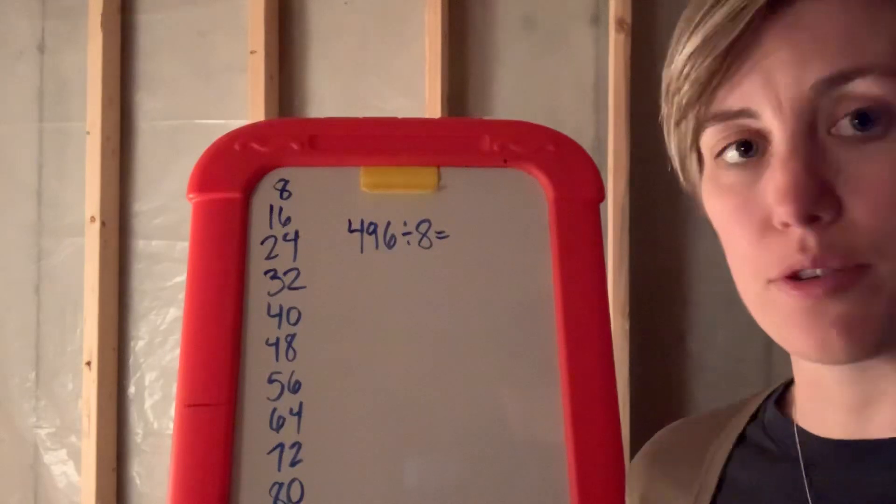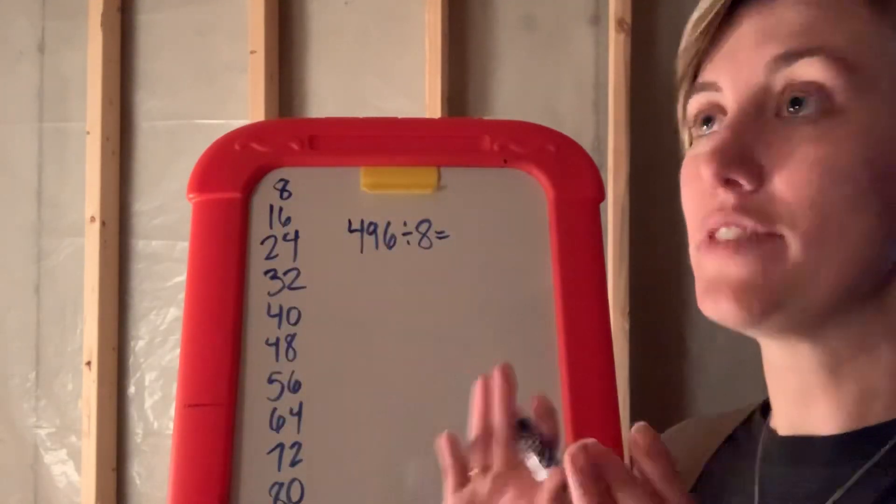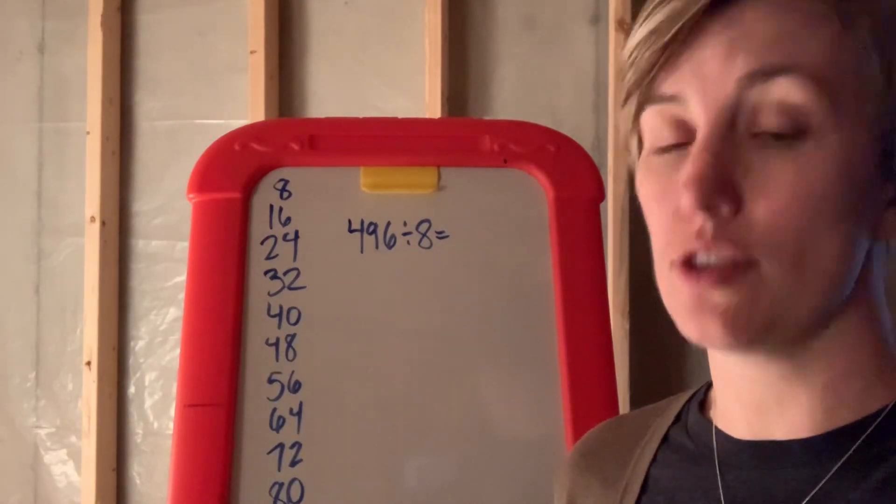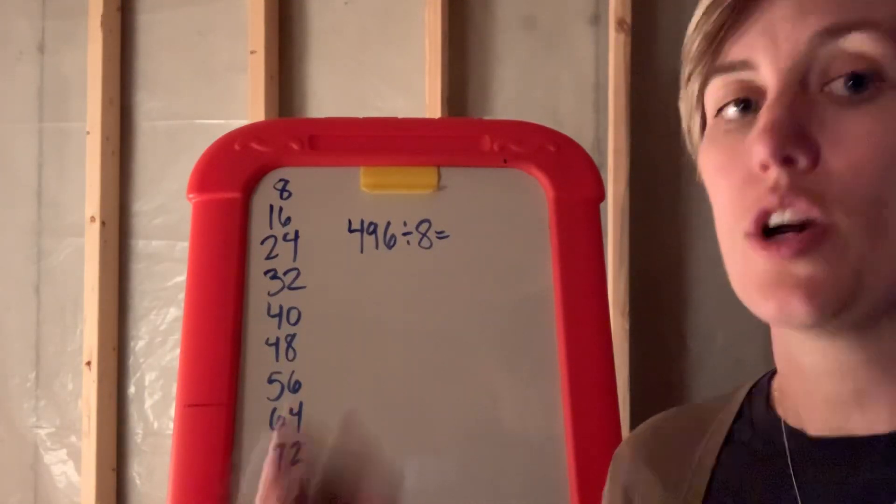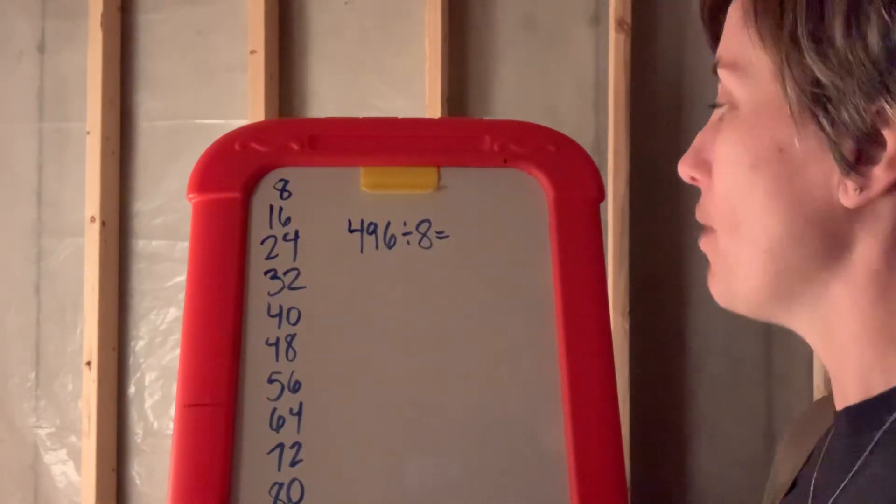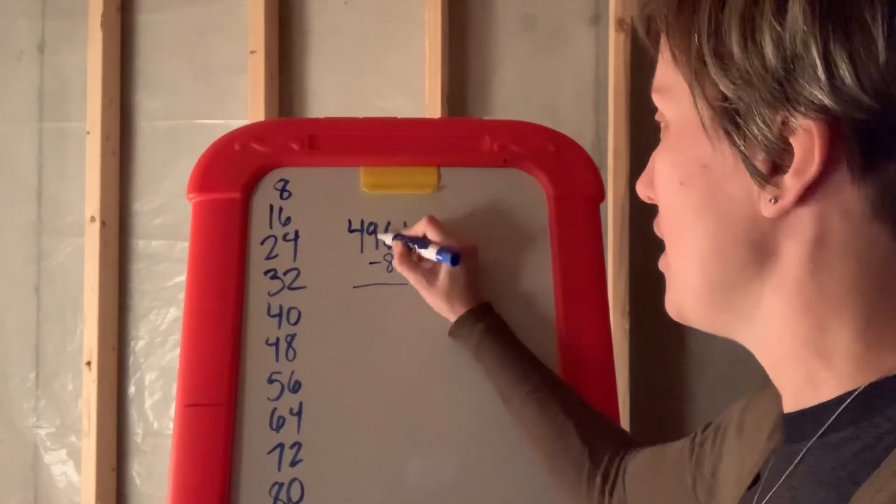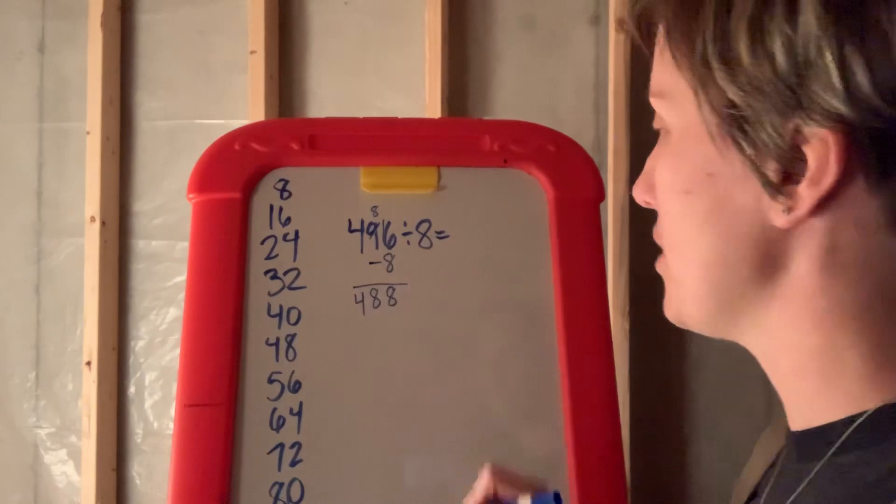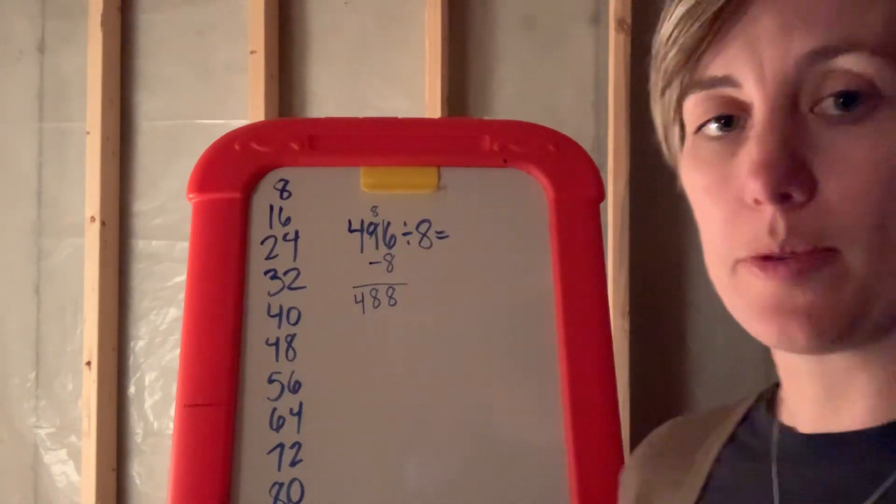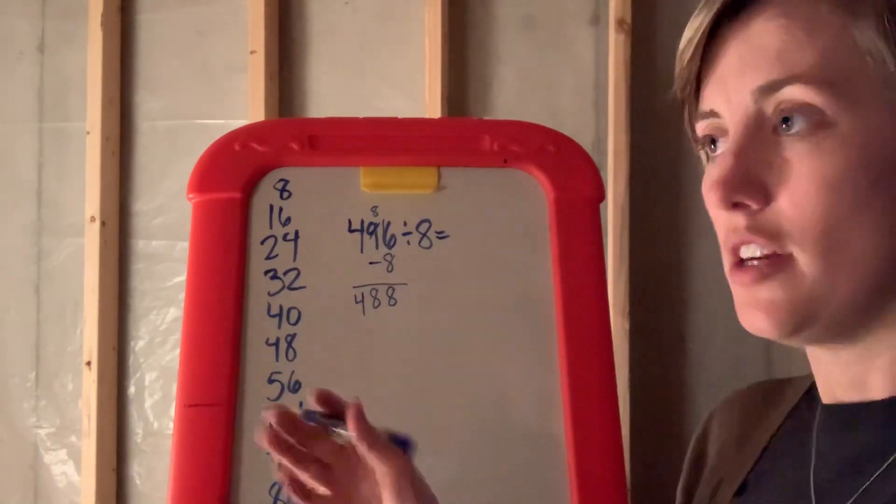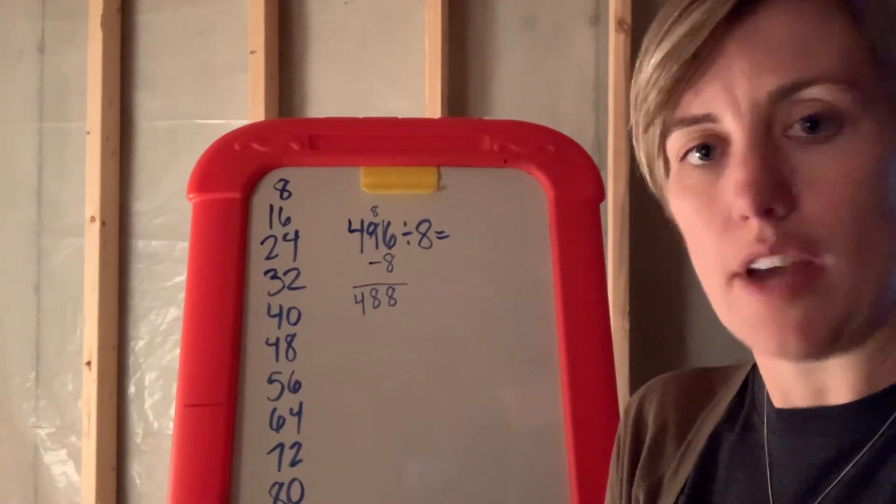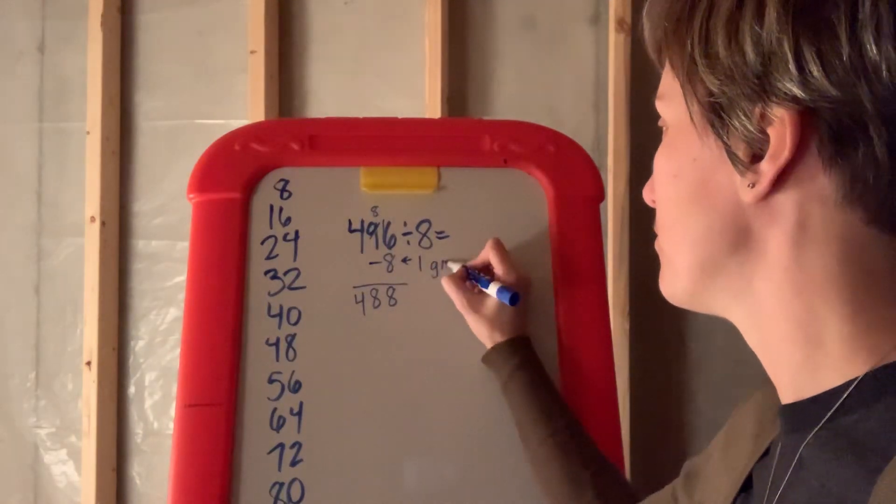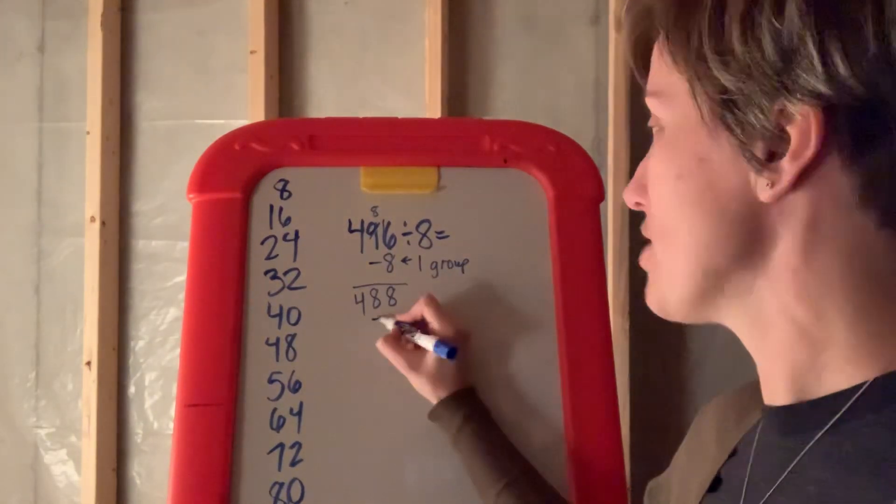I call it for my students our tower of strength, our safety net of information. That is going to give you all the information you need to make an educated decision about what numbers you're going to choose when you are subtracting. So what we could do, we could take away 8 here and we would have to borrow to make this work and we would get 488. How many groups of 8 is 8? If you have 8 items in a group and 8 items is all you have, how many groups is that? That's one group of 8.